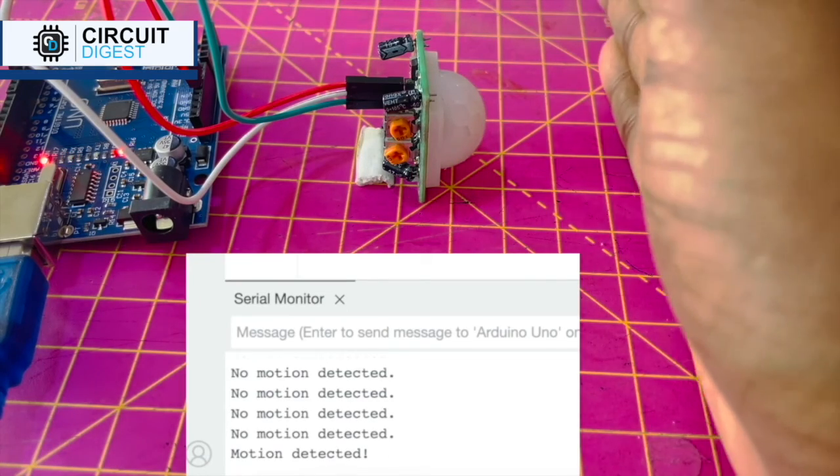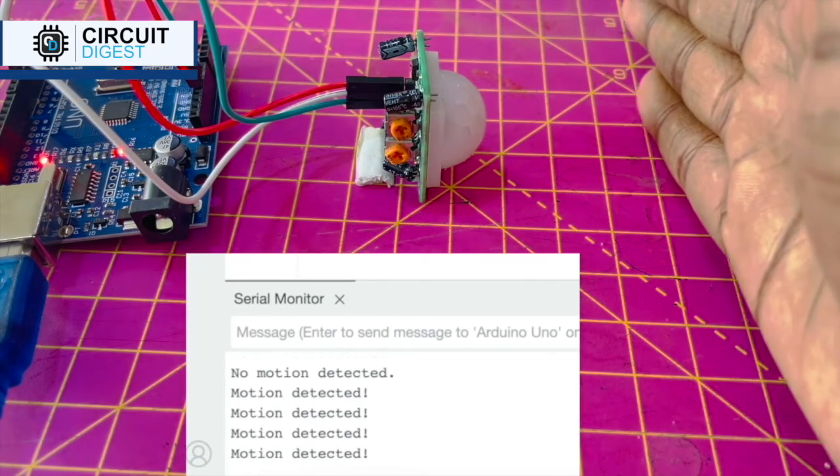And there you have it. A fully functional motion detection system using an Arduino and a PIR sensor.